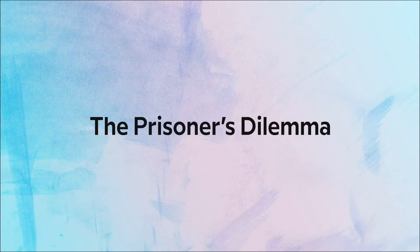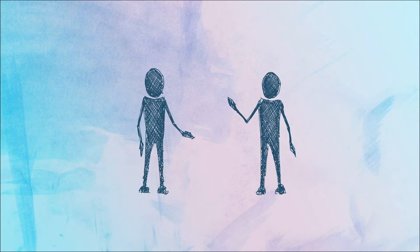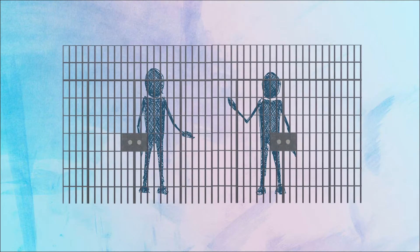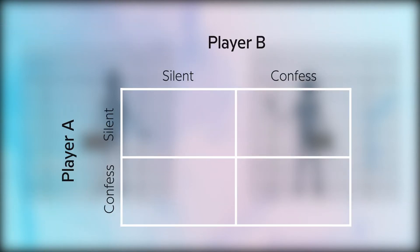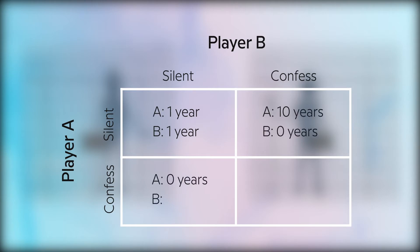Let's understand this using the most well-known example of game theory: the prisoner's dilemma. In this game, we have two prisoners, player A and B, who were caught for the same crime and are held in two different interrogation rooms. They've been given two choices: stay silent or confess to the crime. If both of them remain silent, both of them get imprisonment for one year. If either one of them confesses, the confessor walks free and the other prisoner gets 10 years of imprisonment.